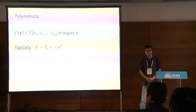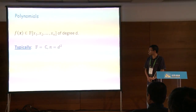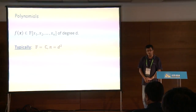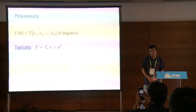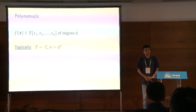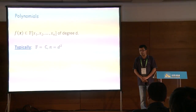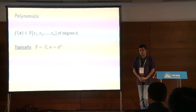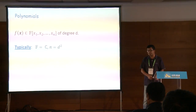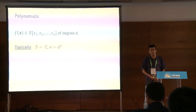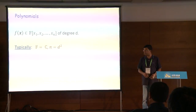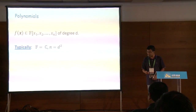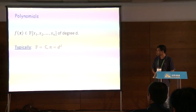The objects of interest in this talk will be polynomials over a field — multivariate polynomials of degree d in n variables. For concreteness you can think of the underlying field as the complex numbers. Typically n and d will be comparable, and you can think of the number of variables as roughly d squared.